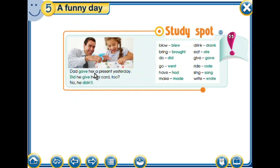'Dad gave her a present yesterday.' We are talking about the past — yesterday — so we use 'gave,' not 'give' or 'gives.' 'Did he give her a card?' — we still talk about the past. To form a question in the past we use 'did,' not 'do.' In the present we say 'do you study English,' but in the past we use 'did': 'did you play football yesterday,' 'did you read the novel yesterday.' With 'did,' the verb doesn't change — not 'gave' in the question, just 'give.'